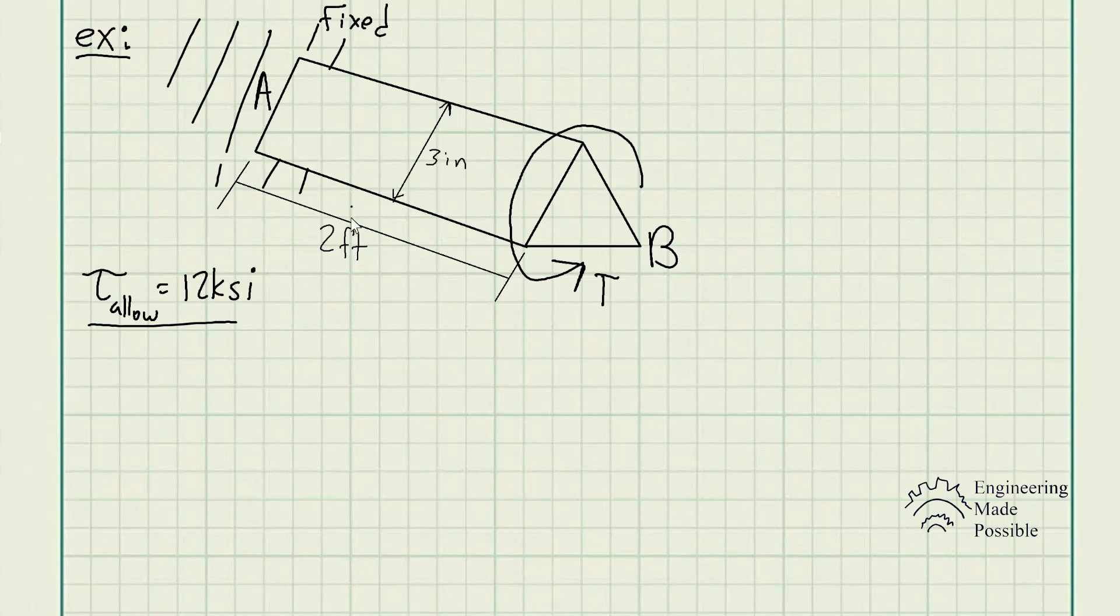So in this case, we're actually given the maximum allowable shear stress that this shaft can experience, which is 12 KSI or 12,000 pounds per square inch. Let me go ahead and write the equation for the maximum shear stress for this cross-section.